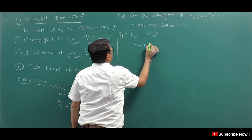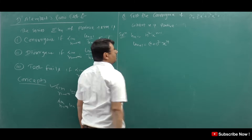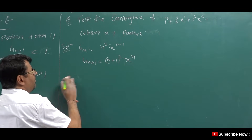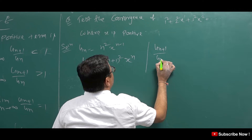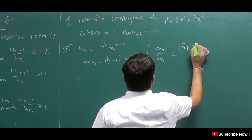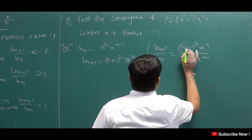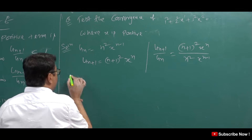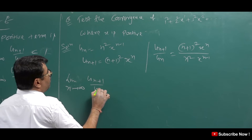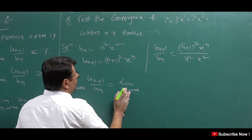So what is u_(n+1)? What will the next term be? Where n is there, we do n plus 1. So here is x to the power n. Now we check the limit: u_(n+1) upon u_n. u_(n+1) is equal to (n+1)² · x to the power n minus 1. Now we will compute the limit n tends to infinity of u_(n+1) upon u_n.